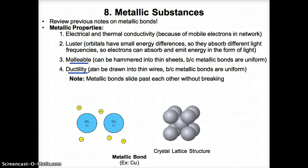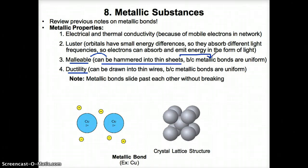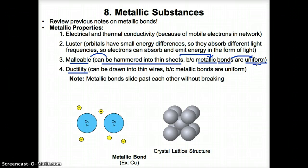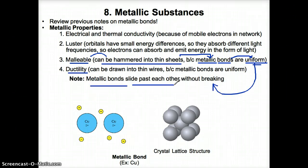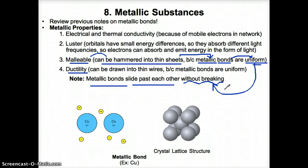Metallic substances are malleable and ductile. By malleable, I mean that metallic substances can be hammered into thin sheets. This is because of the nature of metallic bonds — specifically, they are uniform in terms of how they are bonded. By uniform I mean that the metallic bonds can slide past one another very easily when you try to hammer them without breaking, so that they flatten into a thin sheet. That's the reason why metallic substances are malleable.